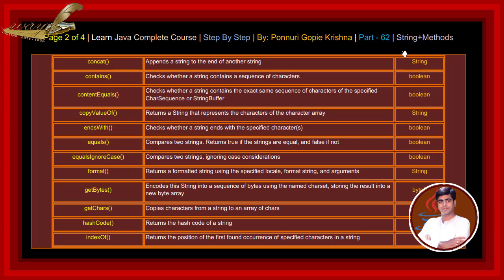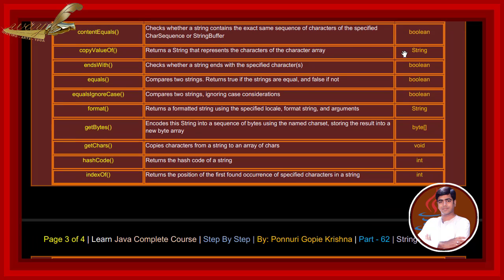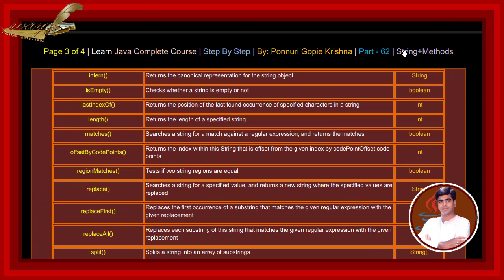indexOf method returns a position of the first found occurrence of specified characters in a string. intern method returns the canonical representation for the string object. isEmpty method checks whether a string is empty or not. lastIndexOf method returns a position of the last found occurrence of specified characters in a string. length method returns the length of a specified string.